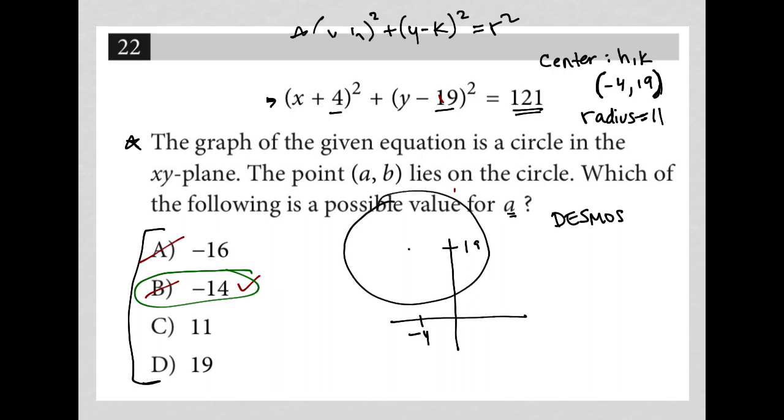If this is -4 and let's pretend this is 19, and my circle looks like this, and I know that the endpoint of this circle is at 7 and the endpoint of this circle is at -15, then that's why -16 wouldn't make sense for the circle to touch it. Positive 11 wouldn't make sense for the circle to touch it there, and positive 19 also would not make sense. The only value that would make sense is -14, and it's actually going to touch the circle in two places.